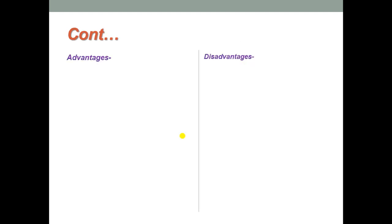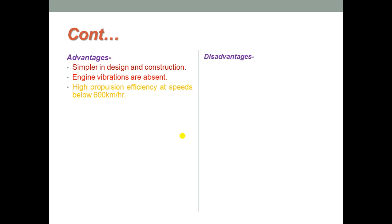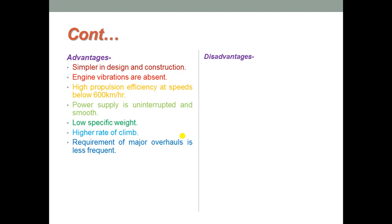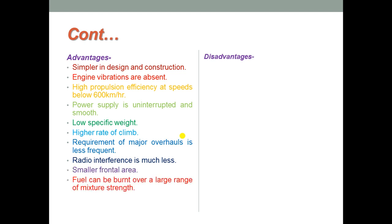The turbo prop has several advantages compared to the turbo jet: simpler in design and construction, engine vibrations are absent, high propulsion efficiency at speeds below 600 kilometers per hour, uninterrupted and smooth power supply, low specific weight, higher rate of climb, less frequent maintenance requirements, much less radio interference, smaller frontal area, fuel can be burnt over a large range of mixture strengths, and maximum altitude ceiling is also available.